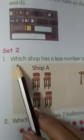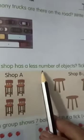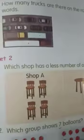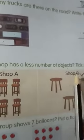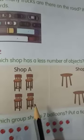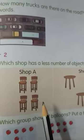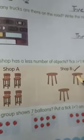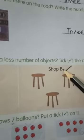The first question is, which shop has less number of objects? Tick the correct one. There are two shops, that is shop A and shop B. So, you have to tick the shop which has the less number of objects. So, this shop B has less number of objects. So, tick this one.